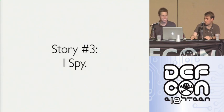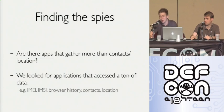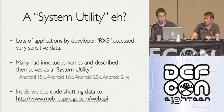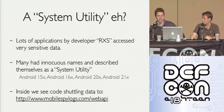Story number three. We said, okay, we found SDKs; are there any things someone might install on my phone to do bad stuff? We dialed up our heuristics to find applications accessing a ton of data. We found a lot of applications in the market called 'system utilities' from a developer called RxS, with names like Android 15X and Android 16X — and we saw code being shuttled to MobileSpyLogs.com.